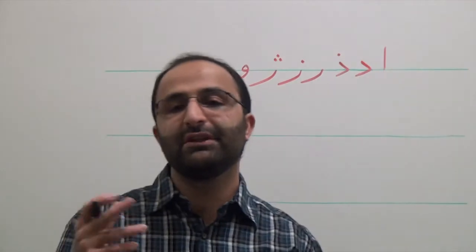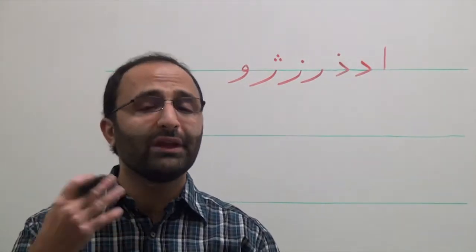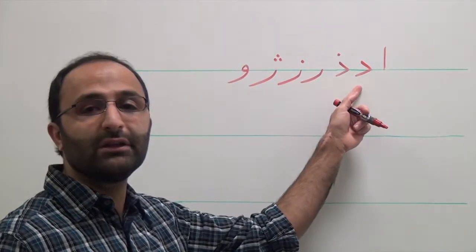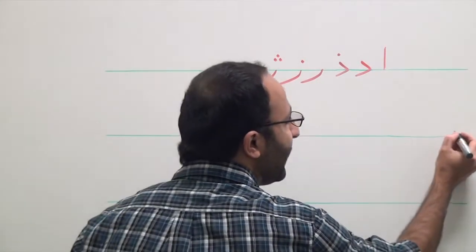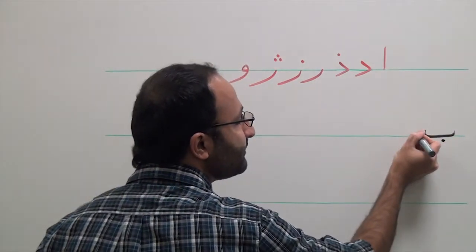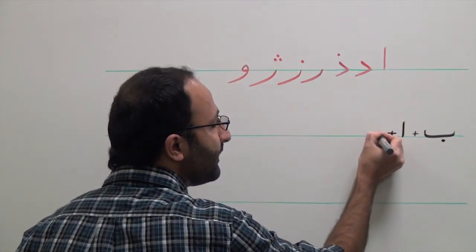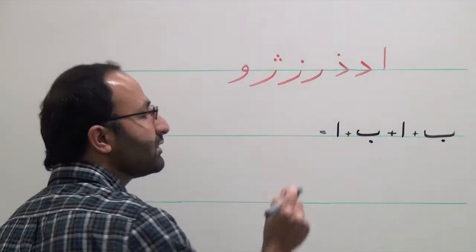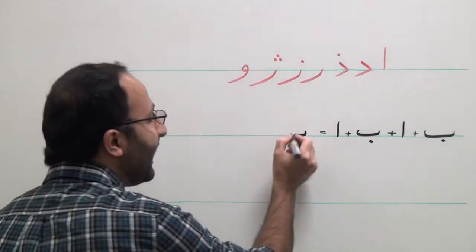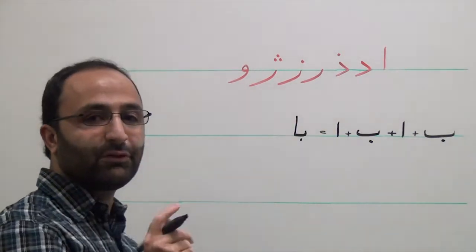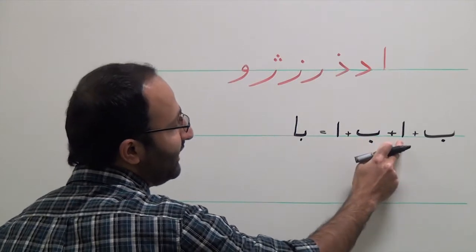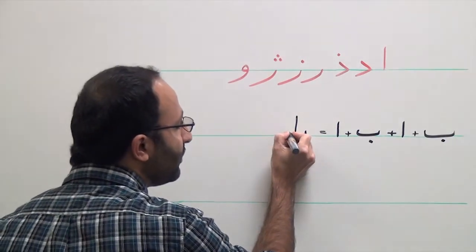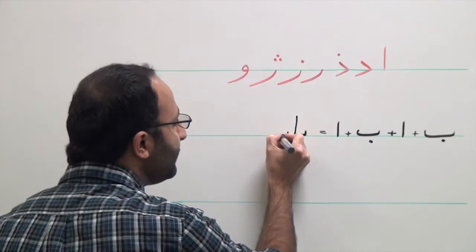According to previous lessons, we said that we should connect all the characters together from right to left. But these characters cannot be connected to the following characters. For example, we have B, Aleph, B, and Aleph. The way we should connect them is the initial form of B, and then we have Aleph, which has just one form. But we cannot connect B to the Aleph because Aleph is one of those characters that cannot be connected to the following character. So we write again an initial form of B and Aleph.